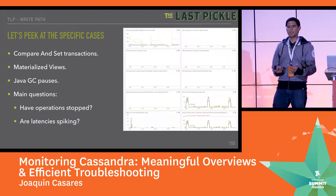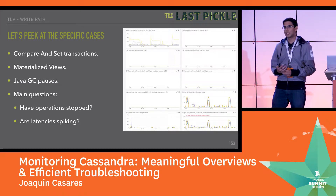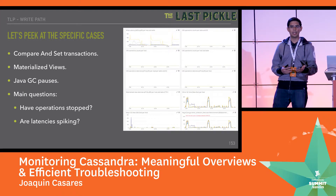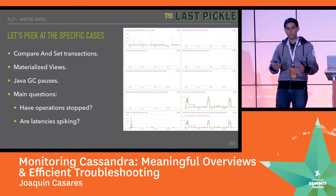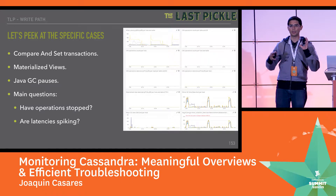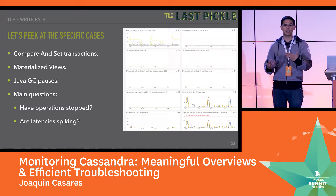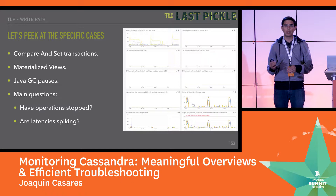We also start looking at specific cases. Cassandra has compare-and-set, which is lightweight transactions for a distributed system. Materialized views are a newer feature but have performance issues, especially if the data model isn't materialized-view-friendly. Java GC pauses are always an issue — if your CPU is pausing, you can't insert writes or serve reads, and as soon as you start backing up, everything else follows. The main questions are: are we still processing, and what are latencies looking like?